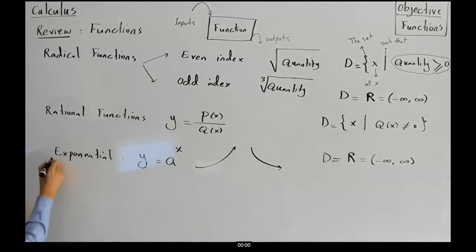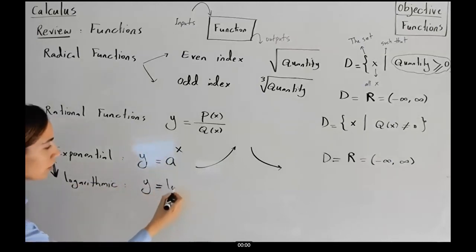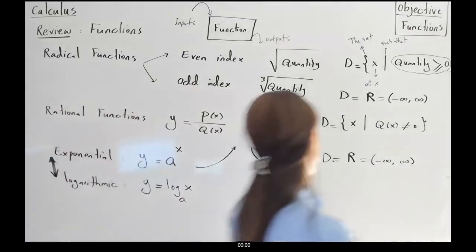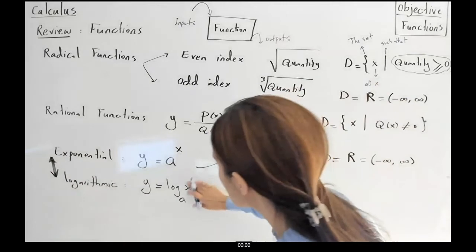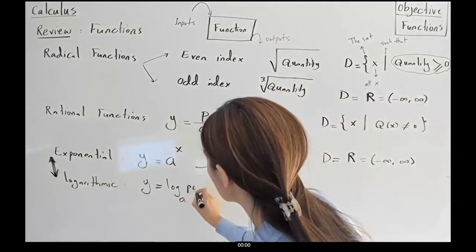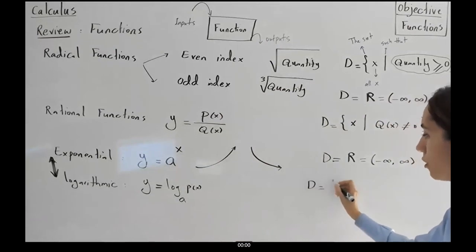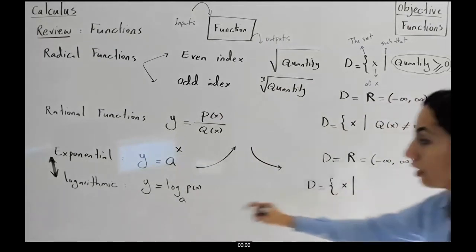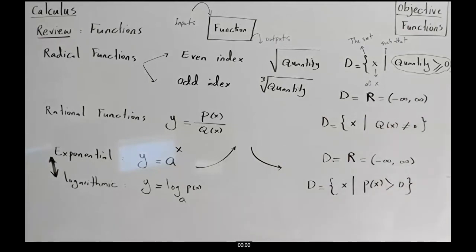The inverse of an exponential function is the logarithmic function. The general definition is Y equals to log base A of X — or more generally of P of X. To find the domain of a logarithmic function, the set of all X values such that the quantity P of X is always greater than zero. This is the domain of a logarithmic function.